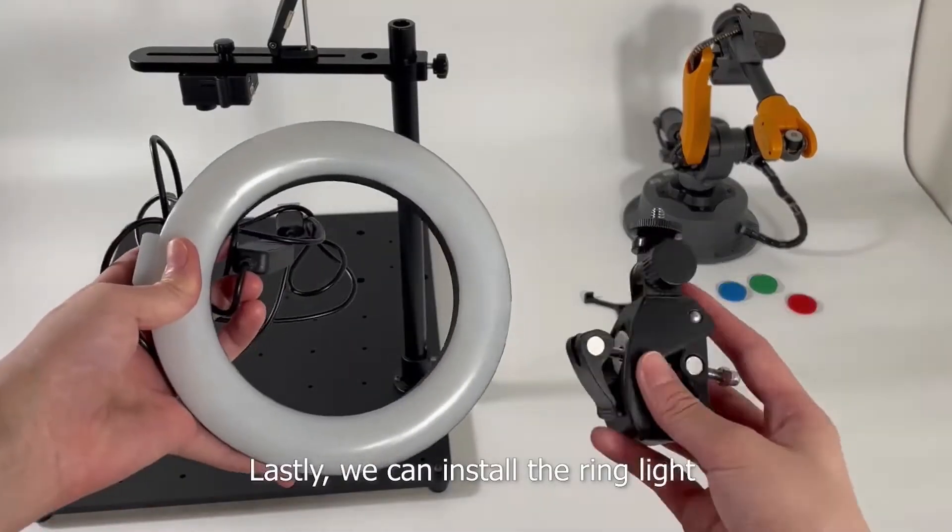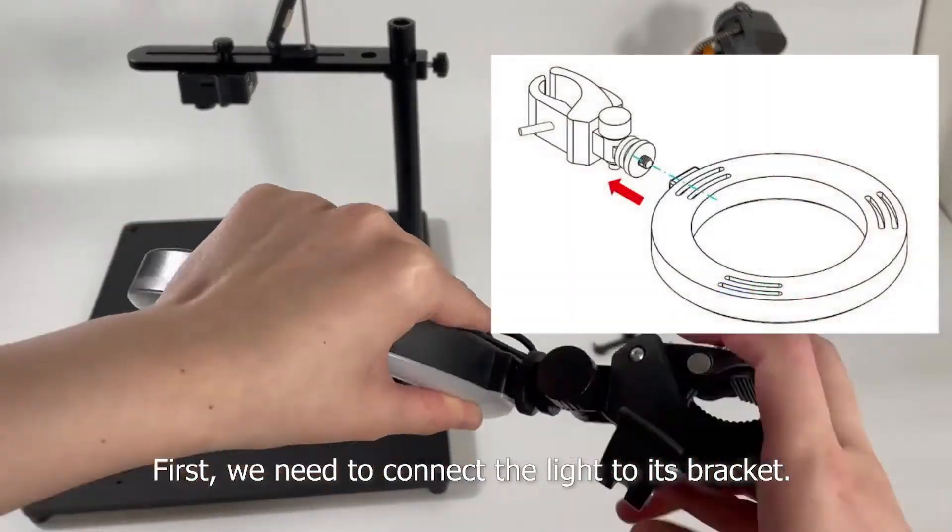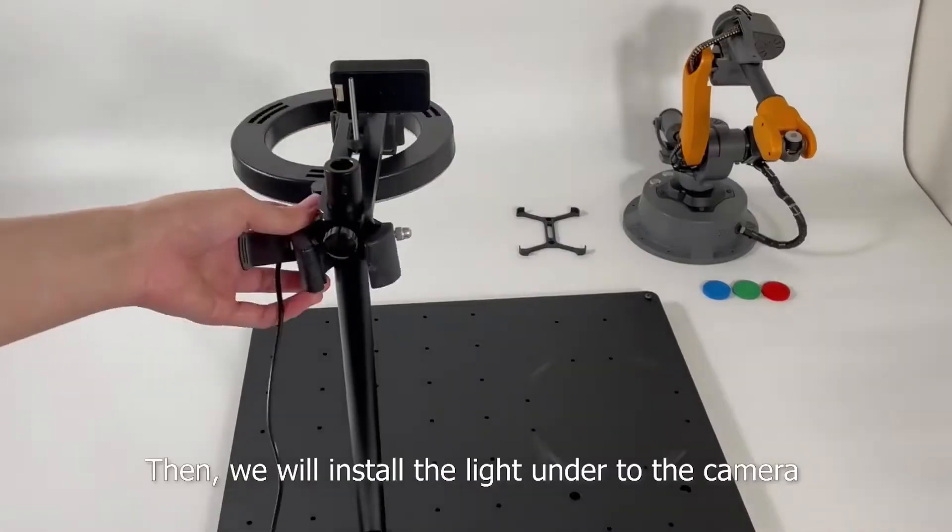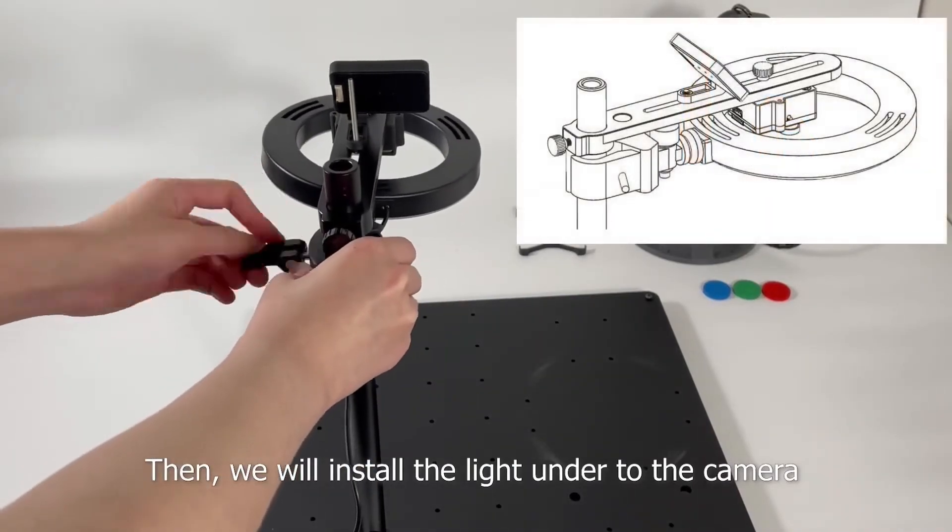Lastly, we can install the ring light. First, we need to connect the light to its bracket. Then, we will install the light under the camera.